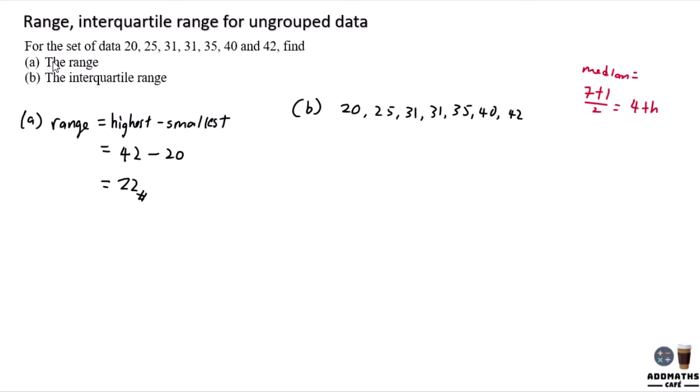So your median is at the fourth position. But to find the interquartile range, your formula for interquartile range is Q3 minus Q1.